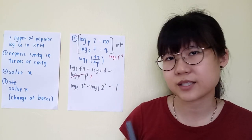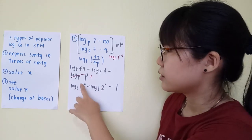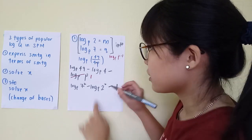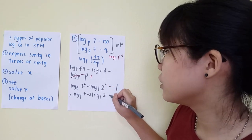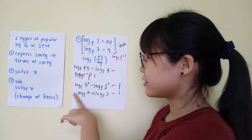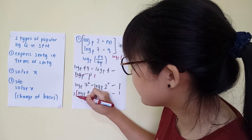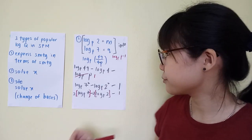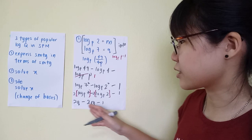Remember: when expressing in terms of something else, you cannot leave powers on the log — everything has to be brought in front using the third law of logarithms. So bring the 2s in front: 2·log_p(7) minus 2·log_p(2) minus 1. Now you can see the similarity — log_p(7) is Q and log_p(2) is M. Substituting gives you the final answer: 2Q minus 2M minus 1.